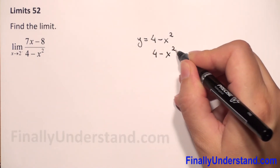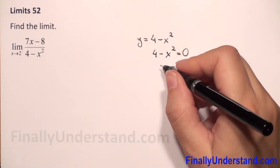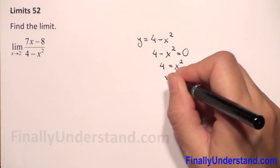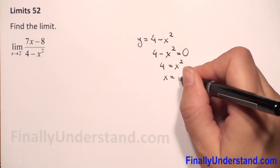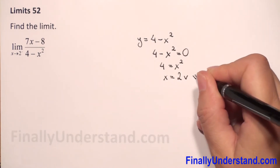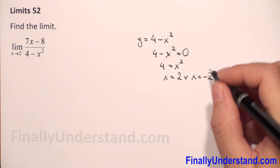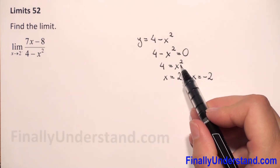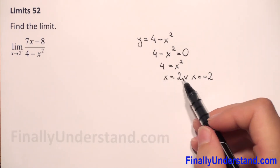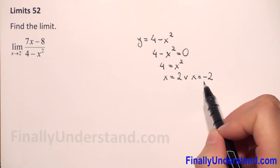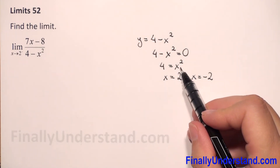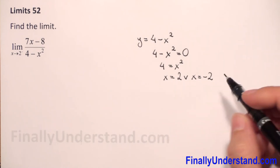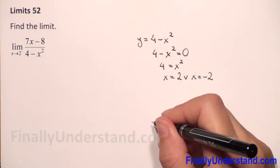We need to find the roots, so we solve 4 minus x squared equals 0, giving x squared equals 4, so x equals 2 or x equals negative 2. We verify: 2 squared is 4, and negative 2 squared is also 4. Now we have the roots.